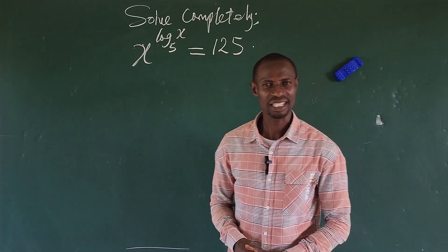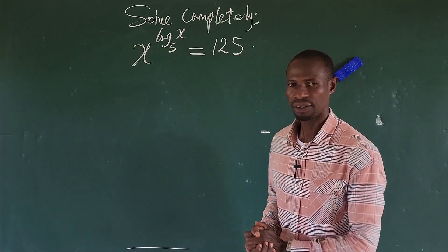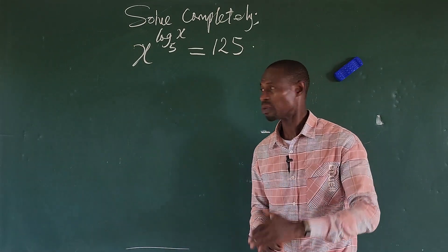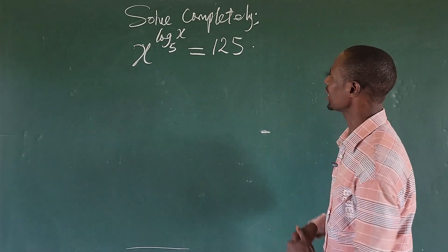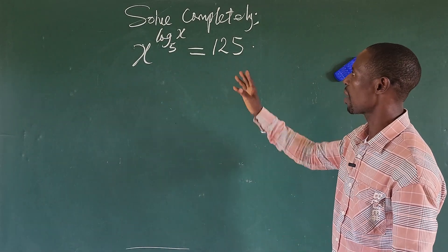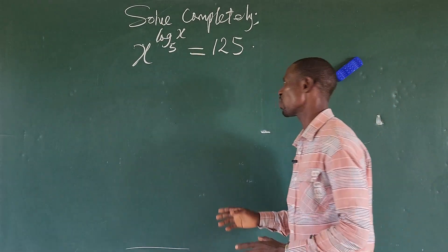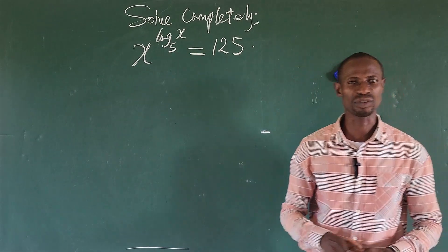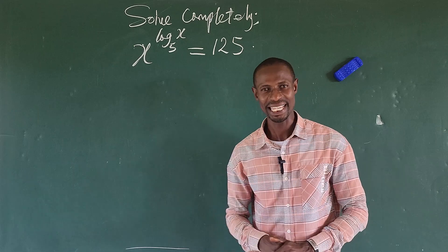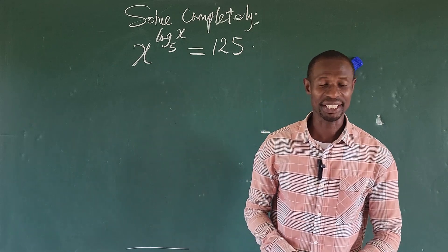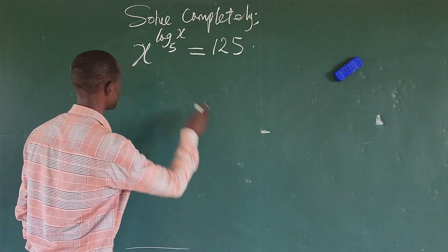Hello, welcome to this class. We have this question before us — a very quick one. The question says: solve completely x to the power of log_x 5 equals 125. So what is the value of x that satisfies this equation? Let's go into solving without much waste of time.